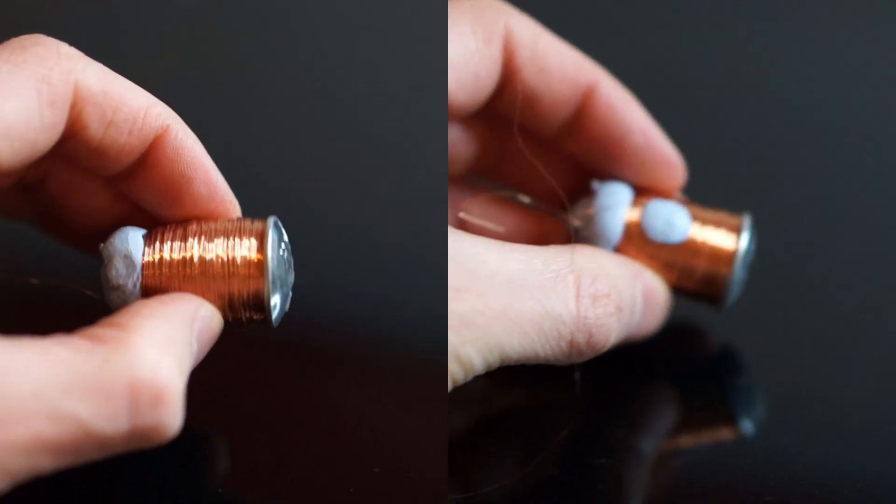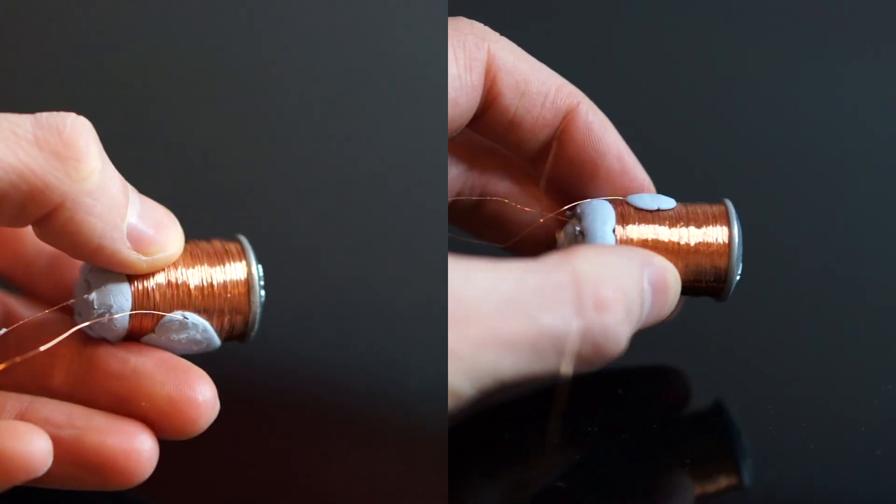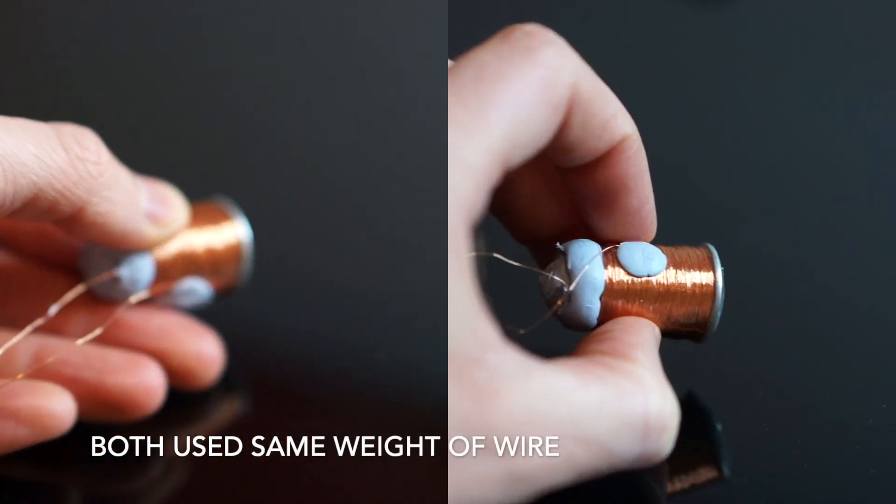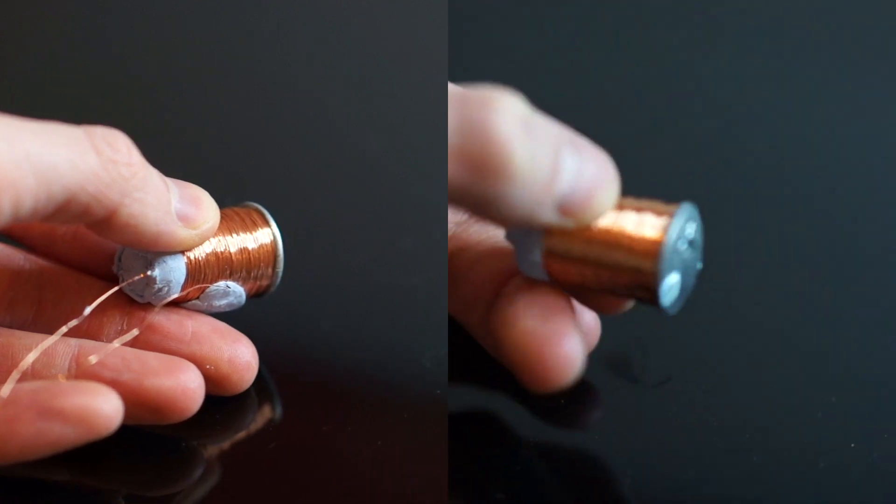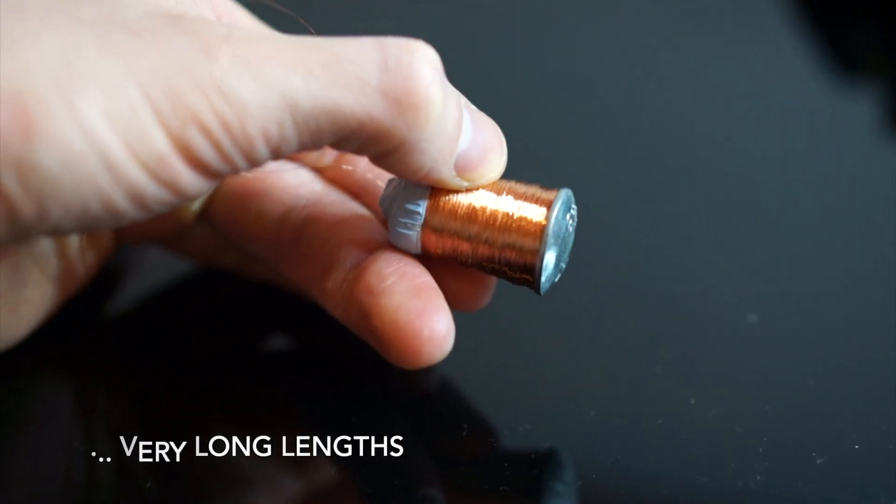I don't know exactly how long each coil wire is but I use the same weight of copper for both and the 0.1 millimeter wire certainly has quite a long length many hundreds of meters.